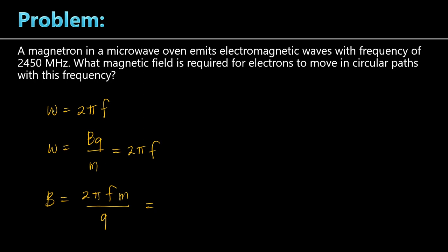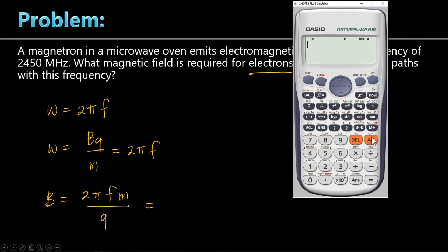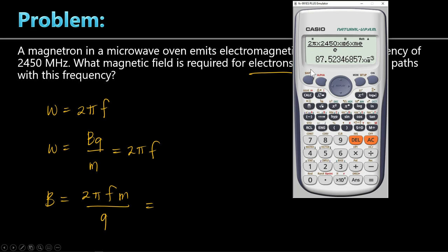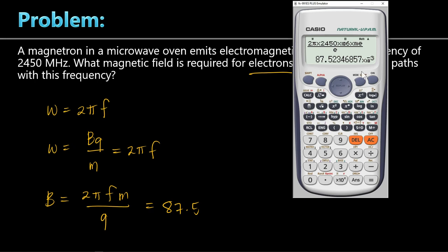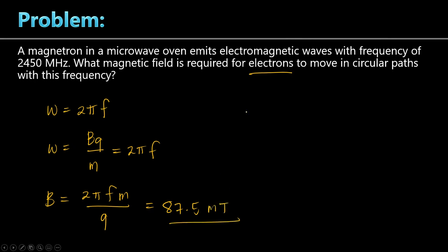Computing in the calculator with frequency 2450 MHz, electron mass (constant 03), divided by electron charge (constant 23), the result is 87.5 times 10 to the minus 3, or 87.5 milli Tesla. The key relationship is: omega equals 2 pi F, and omega equals BQ over M, giving B equals 2 pi F M over Q.